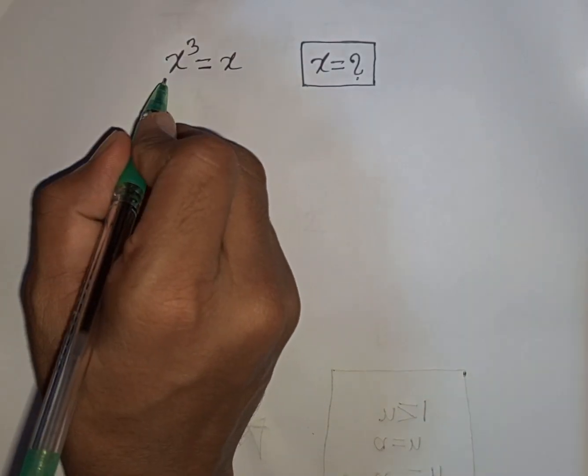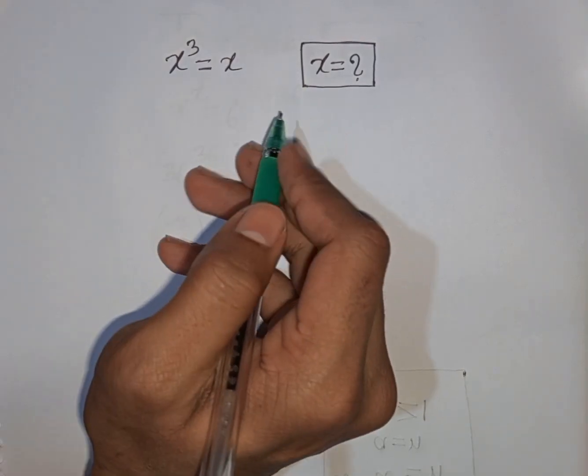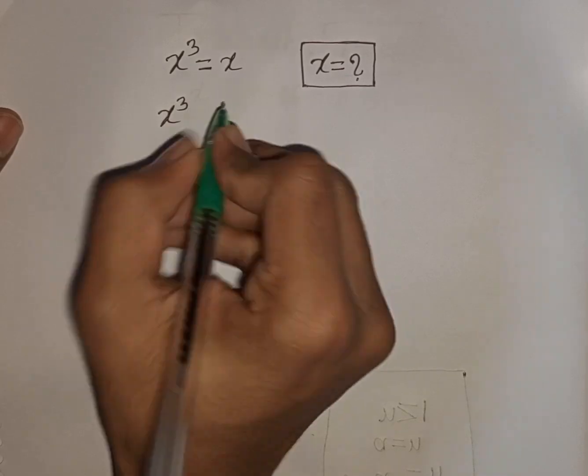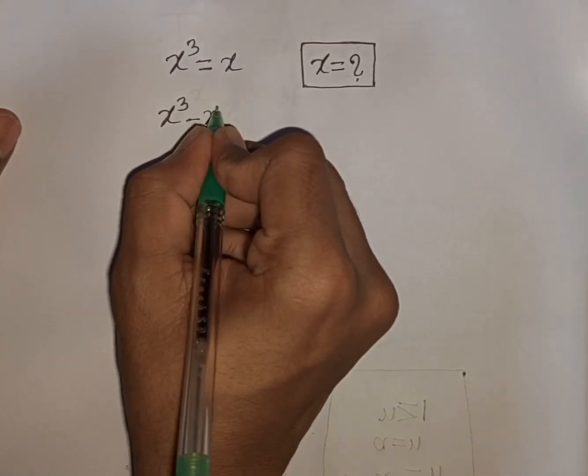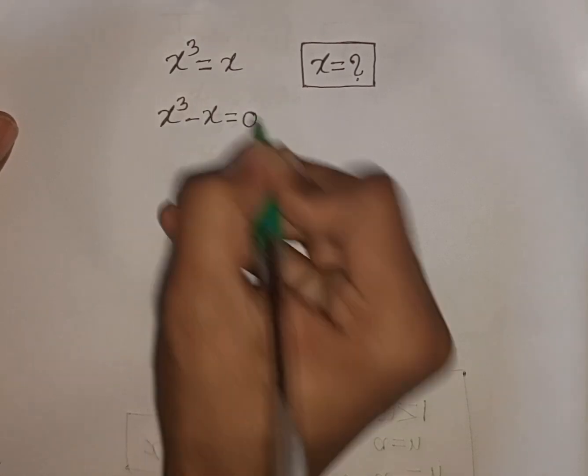How to solve x power 3 is equal to x, find the value of x. We have x power 3, then this plus x take to the left side, so this will be minus x, then is equal to 0.